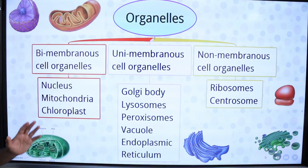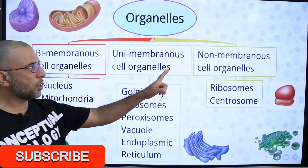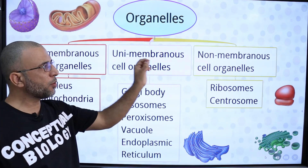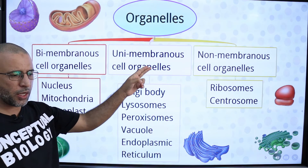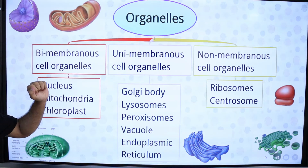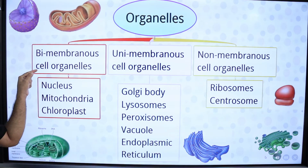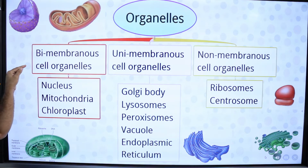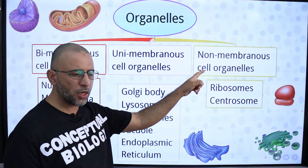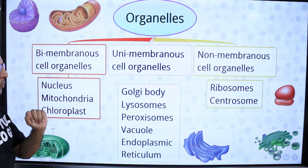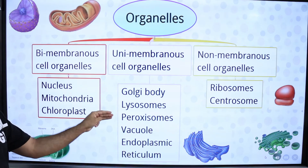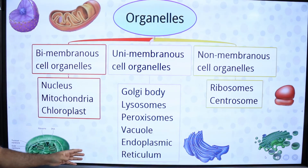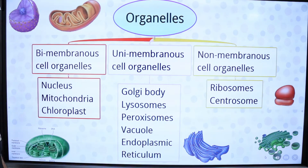Organelles are classified into three categories: non-membranous organelles (not bounded by any membrane), uni-membranous organelles (bounded by a single membrane), and bi-membranous organelles (bounded by two membranes). Non-membranous organelles include ribosomes and centrosomes. Uni-membranous organelles include Golgi bodies, lysosomes, peroxisomes, vacuole, and endoplasmic reticulum. Double-membranous organelles include the nucleus, mitochondria, and chloroplast.